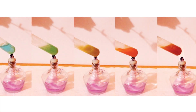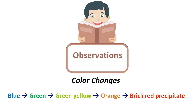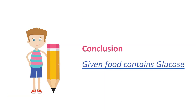Here is the series of color changes that we just observed. The solution started from blue color, then it turned green, then greenish yellow, then orange, and ended up as a brick red precipitate. So we can conclude that the given food contains glucose.